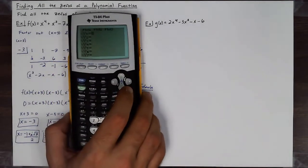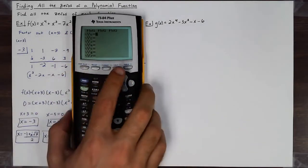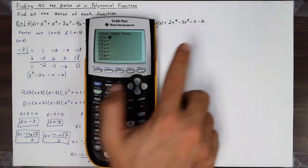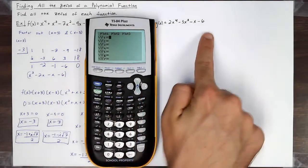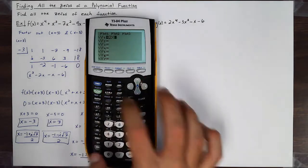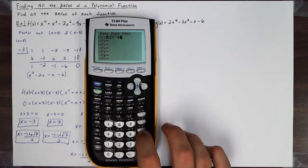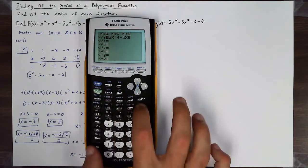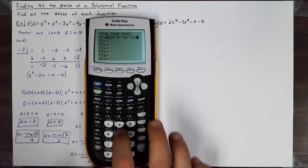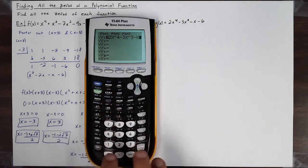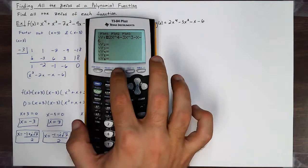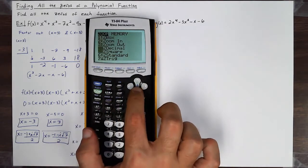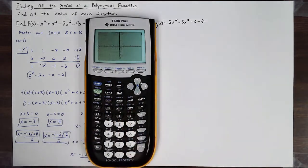I'm first going to do a bit of research by plotting this graph. So 2x to the fourth minus 3x to the third minus x minus 6 — I'm going to plot this in a standard unaltered window.